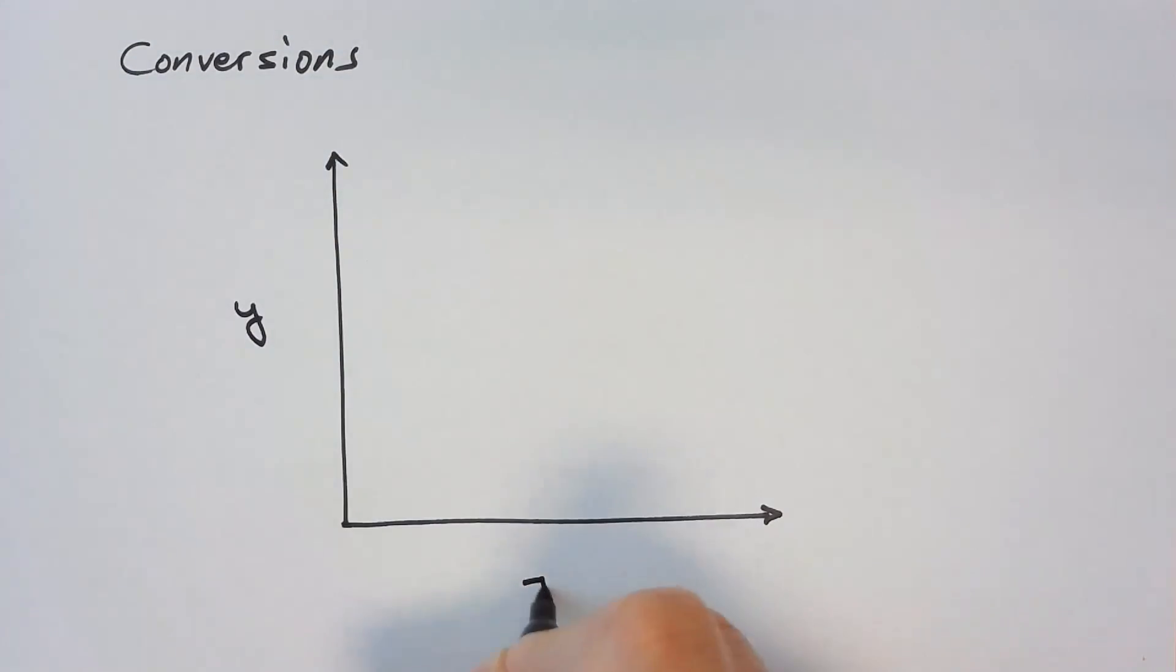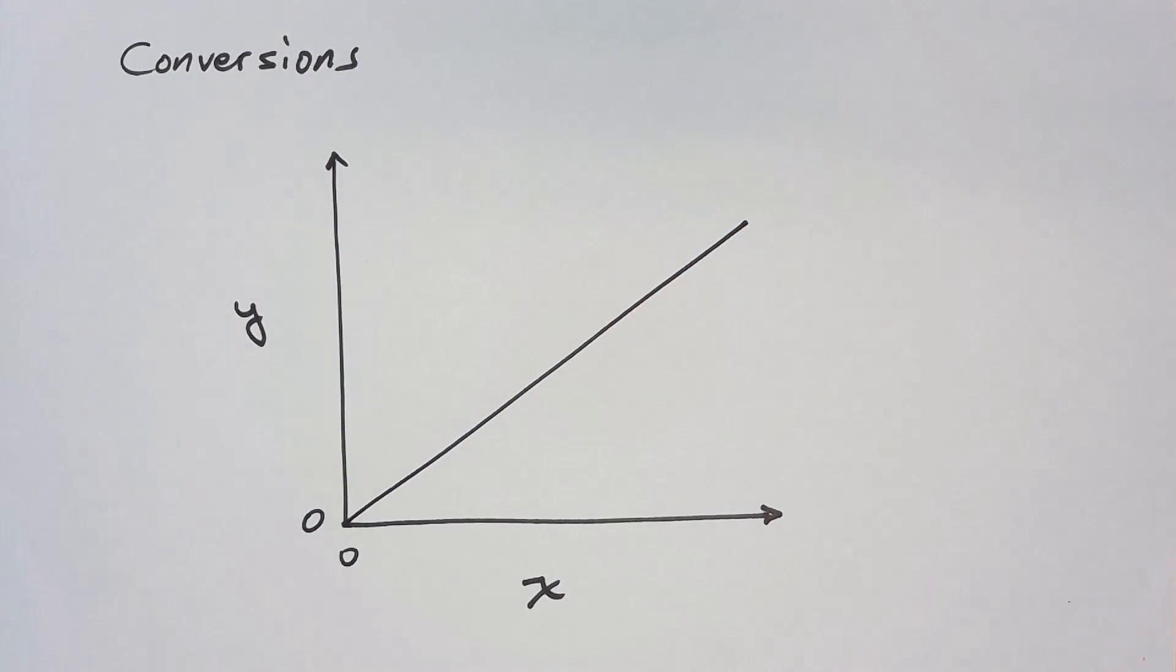Such a conversion can be illustrated by a two-dimensional graph where the y-axis is one unit and the x-axis the other.